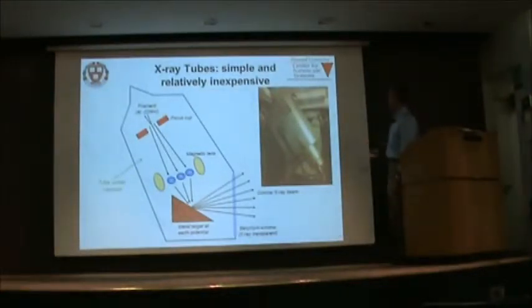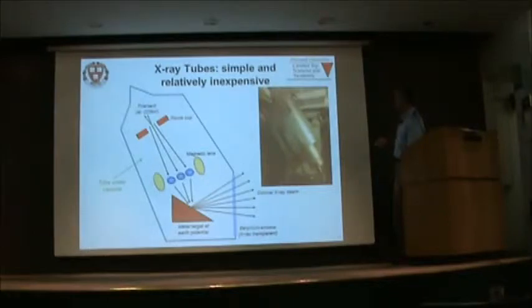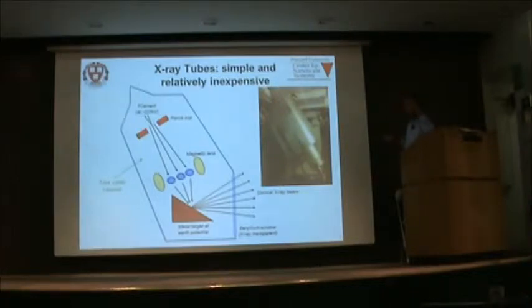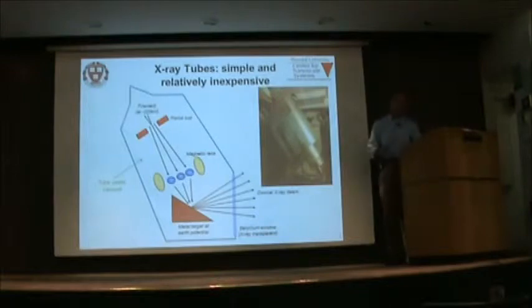This is a picture showing the X-ray tube in our system. The black part is the high voltage cable. The filament is behind there, and this part is the magnetic lens. Down here is where the metal target is located — it's cooled by water, so the blue lines are water lines. There is a small beryllium window where the X-rays come out.